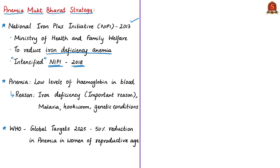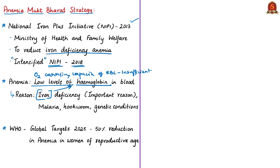The main objective of this strategy is to reduce the prevalence of anemia by 2022. Anemia is defined as having hemoglobin concentration below prescribed cutoff levels in the blood, with insufficient oxygen-carrying capacity of red blood cells. Iron is the key component of hemoglobin, and iron deficiency is responsible for almost half of all anemia incidence globally. Other causes include malaria, fluorosis, hookworms, other helminths, nutritional deficiencies, chronic infections and genetic conditions.